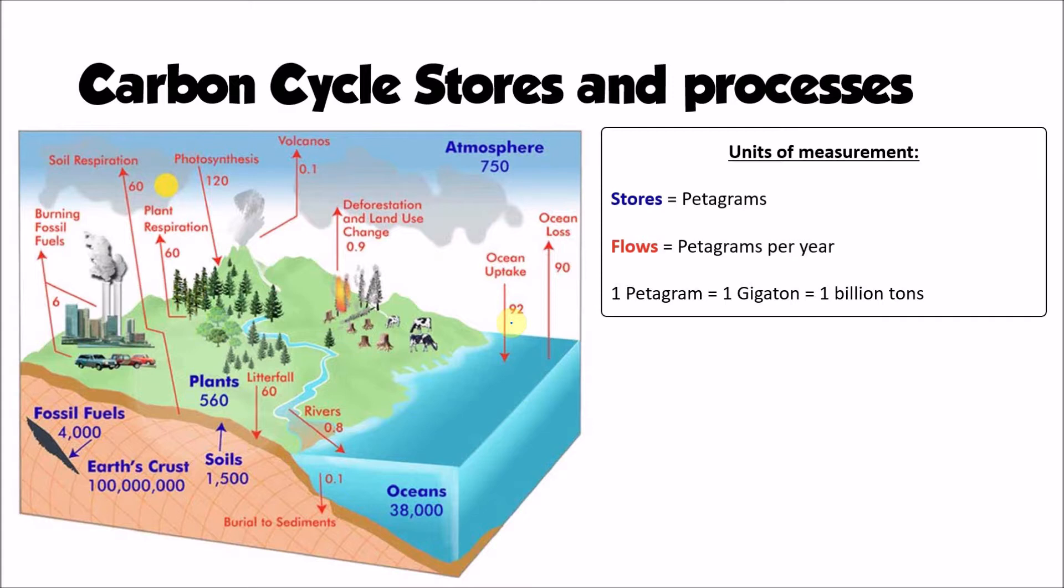If we start with the stores, we can see that by far and away the biggest store on the earth is the earth's crust. So the rocks, the sedimentary rocks that make up the earth's crust, they store a hundred million gigatons or 100 million petagrams worth of carbon. Now that is a huge amount but actually most of it doesn't really do anything in terms of the carbon cycle. Most of that carbon is locked away within sedimentary rocks and it doesn't move out of that store. It's very much sequestered and locked away in that store.